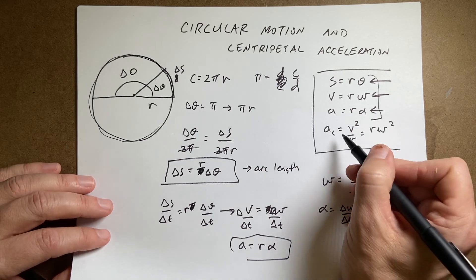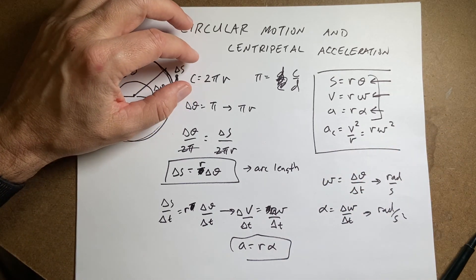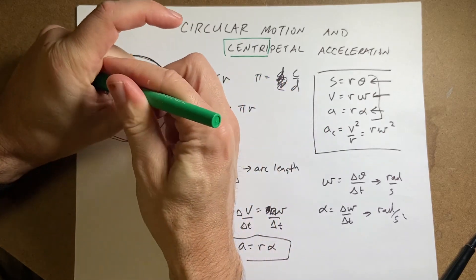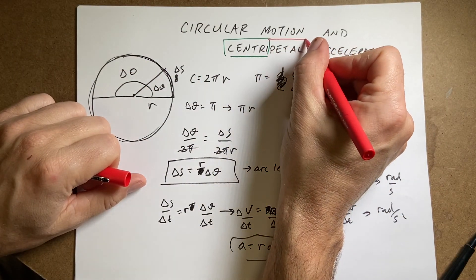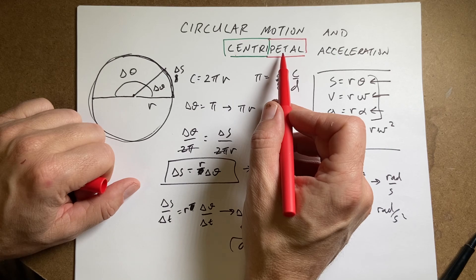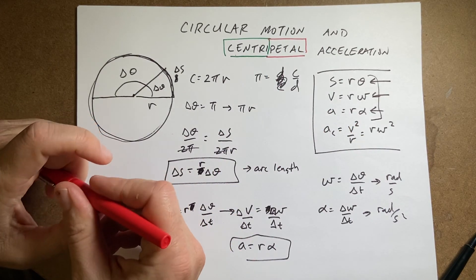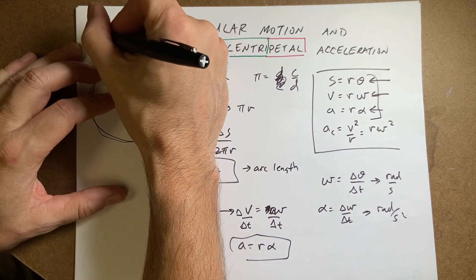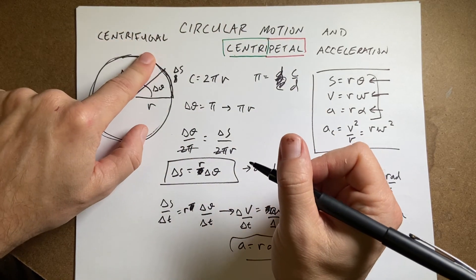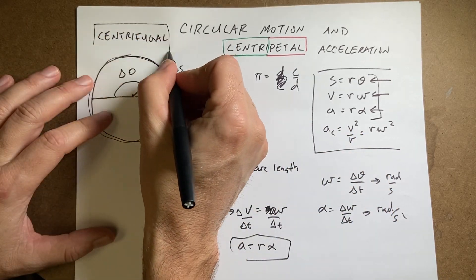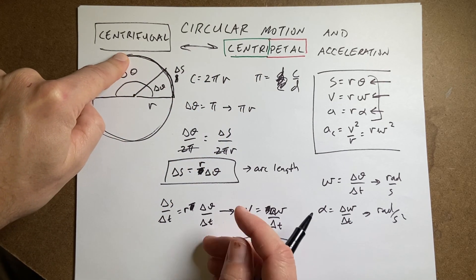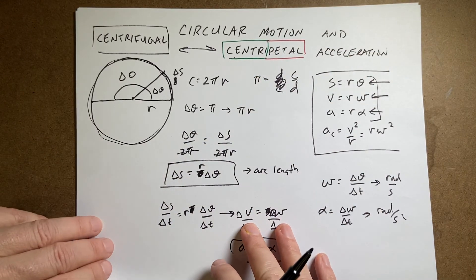But now what about the centripetal acceleration? Let me say this. I can break this into two pieces: centra and pedal. This literally means center pointing. This is the center pointing acceleration. Be careful. There is another word - centrifugal - center fleeing. And I have a video that tells you the difference between these two. But today I'm only going to look at centripetal acceleration. And I'll link the one to the difference between these two down below, so you can go down there and click that.